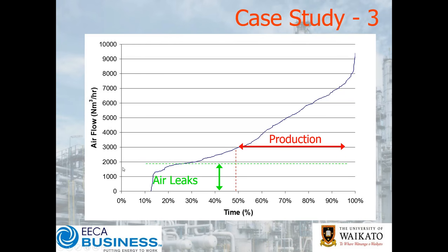You can see that we have a base leak level. They were clever enough to turn the system off part of the time. However, there was quite a chunk of time — this 48% — where they're not actually producing anything. We've got a leak rate with compressors loading and unloading, and then a small amount of air being used for maintenance.